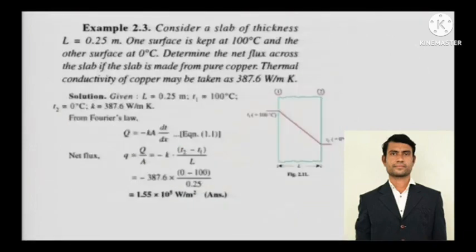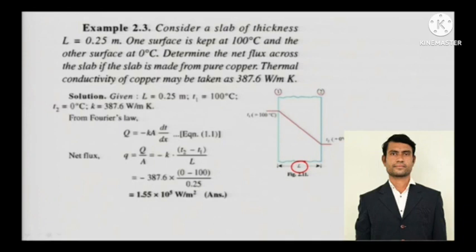Now the next problem: consider a slab of thickness L equal to 0.25 meters. One surface is kept at 100 degree Celsius and the other surface at 0 degree Celsius. Determine the net flux across the slab if the slab is made of pure copper. Thermal conductivity of copper may be taken as 387.6 watts per meter kelvin.